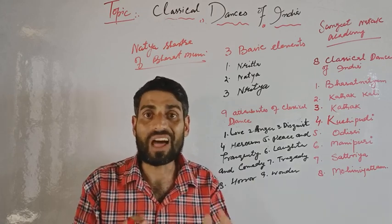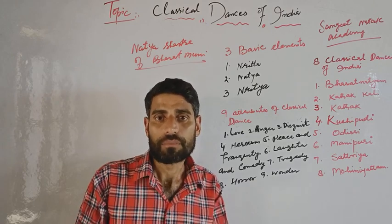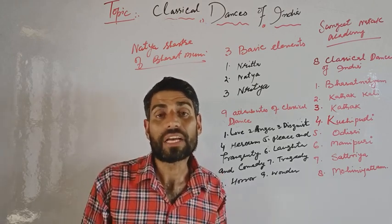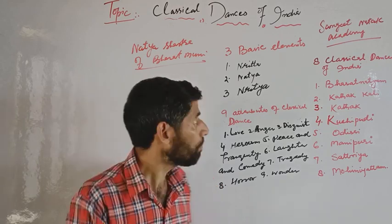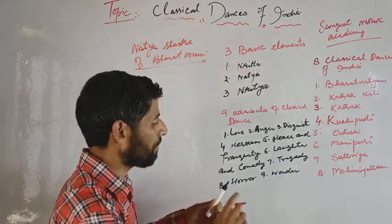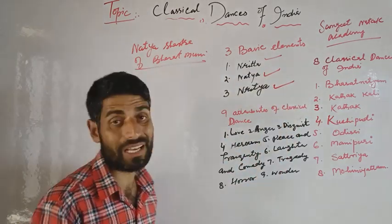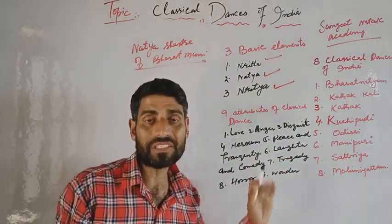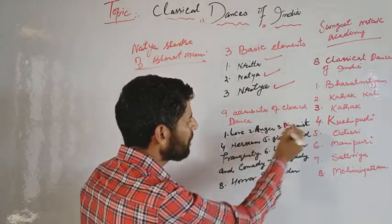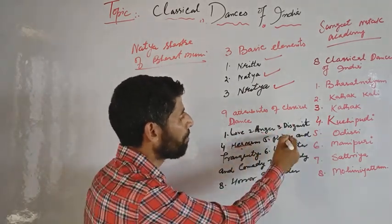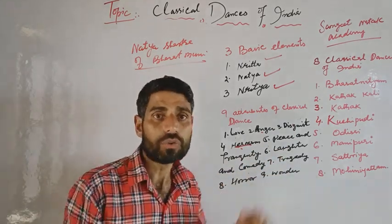The nine rasas are: love, anger, disgust, heroism, peace and tranquility, laughter and comedy, tragedy, horror, and wonder. These three basic elements — Nritta, Natya, and Nritya — and the nine attributes are all mentioned in the Natya Shastra.